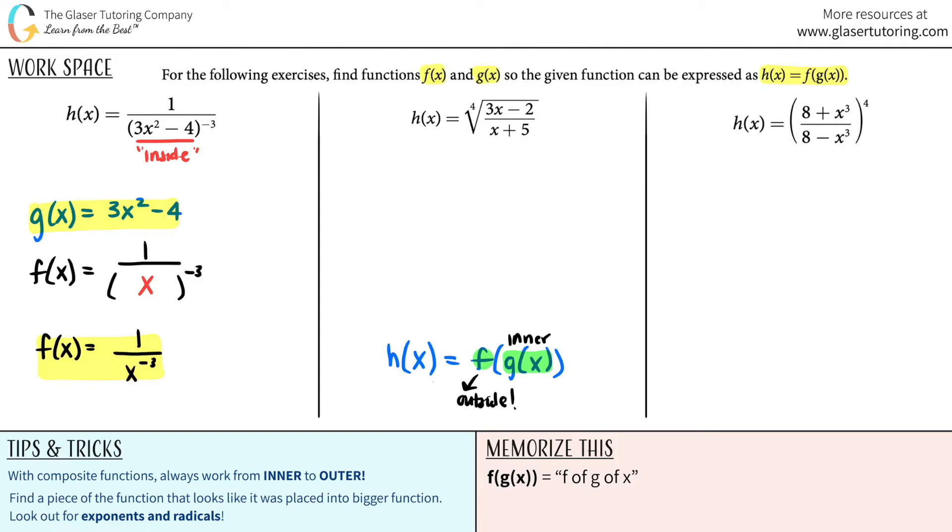Okay, let's move on to the second one. H of x equals the fourth root of 3x minus 2 over 8x plus 5. Is there anything that looks trapped under something else? Not parentheses here, but maybe a radical, a square, or in this case, a cubed root, a fourth root? Oh, looks like this whole thing is trapped inside this radical. So this whole thing is the inside. It's the inner function. There you go. That's the hardest part. G of x equals 3x minus 2 all over x plus 5.